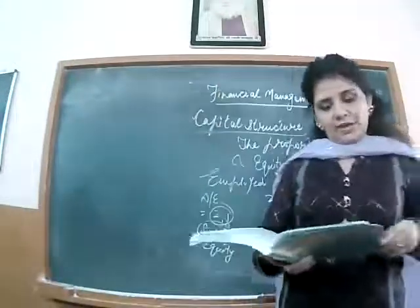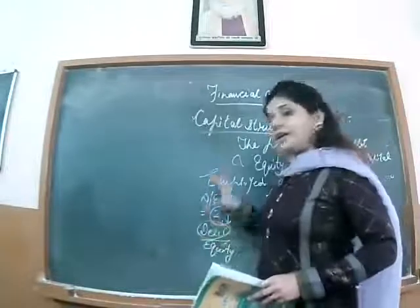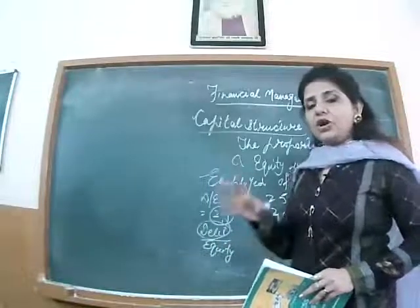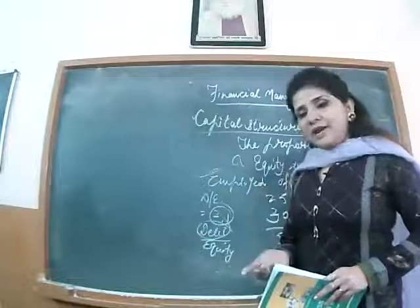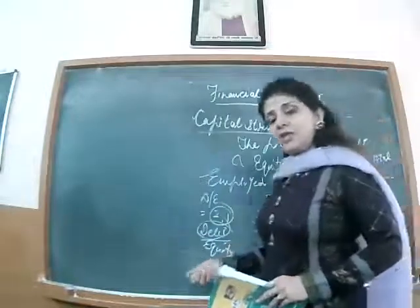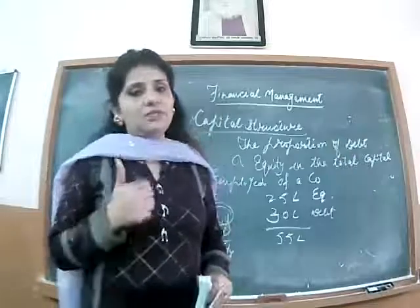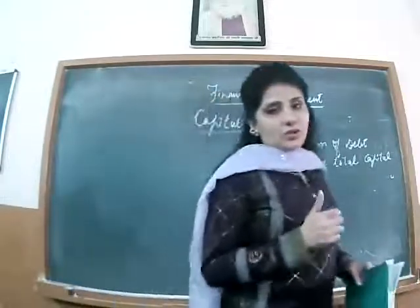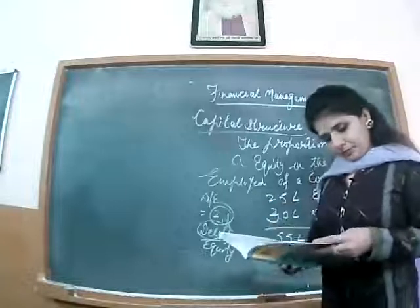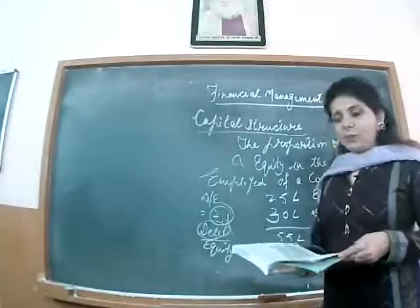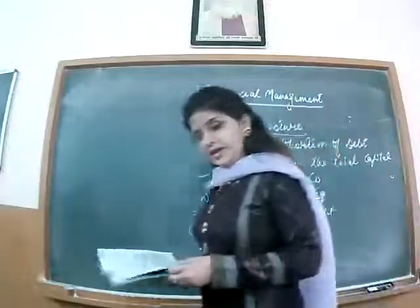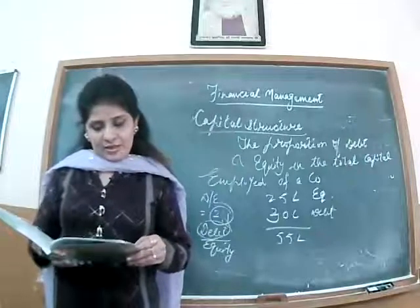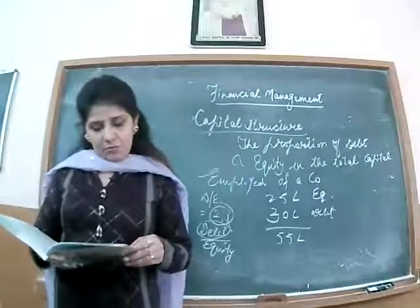One of the important decisions under financial management relates to financing pattern — how much equity in comparison to debt. This is an important decision which a financial manager has to take at the right time. On the basis of ownership, the sources of business finance can be broadly categorized into two parts: owners' funds and borrowed funds.